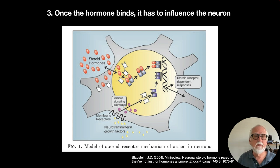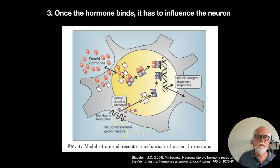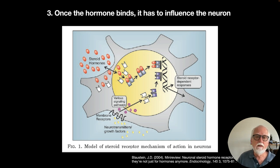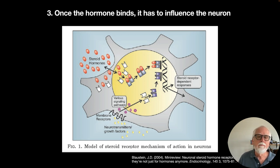Once a hormone reaches the right receptor and binds, it must influence the neuron. Steroid hormones like glucocorticoids can come in and cause changes in mRNA transcription, which may cause the neuron to fire differently or change its dendrites. The steroid hormones affect neurons by passing through the membrane to bind with the nucleus and cause transcription, changing how axon terminals work or how the neuron responds. Both peptide and steroid hormones can influence how neurons fire and grow, just as they do with other cells in the body.